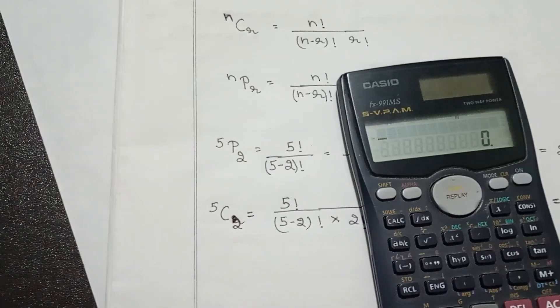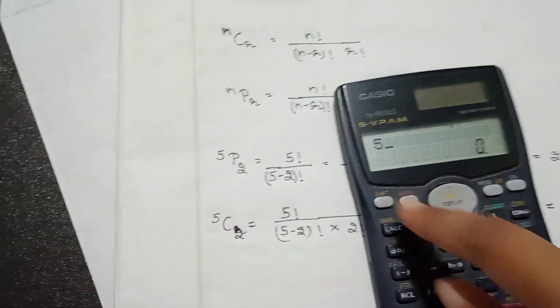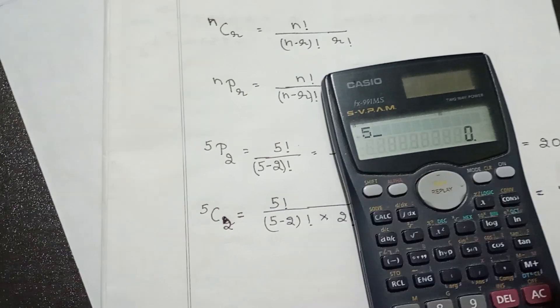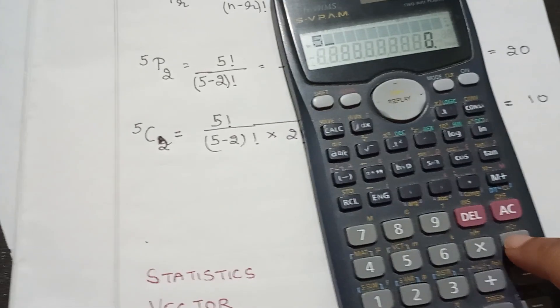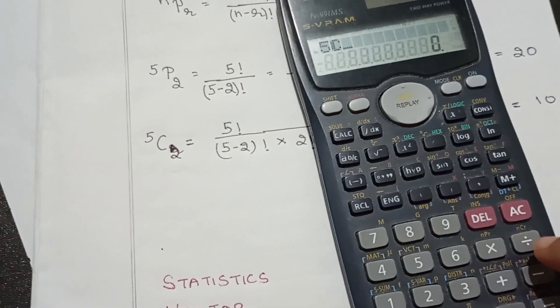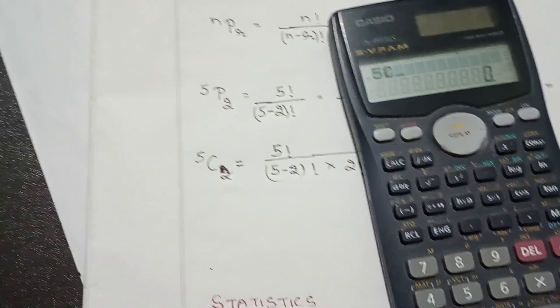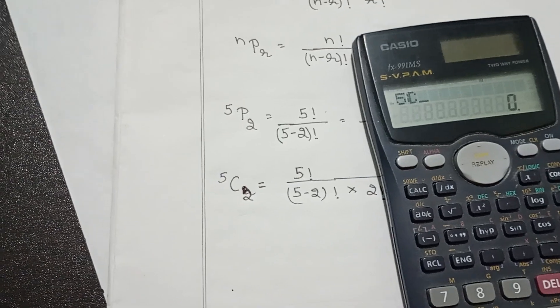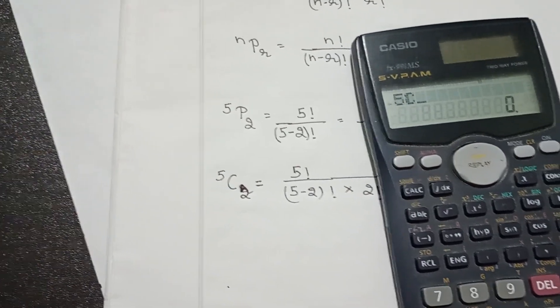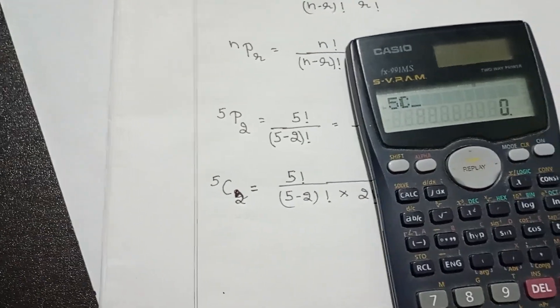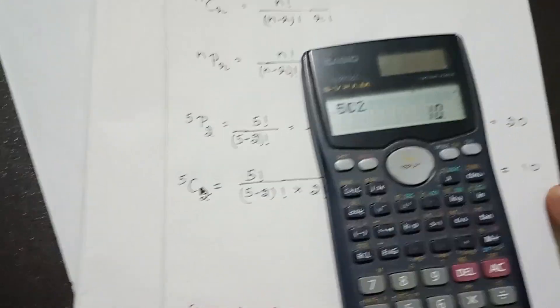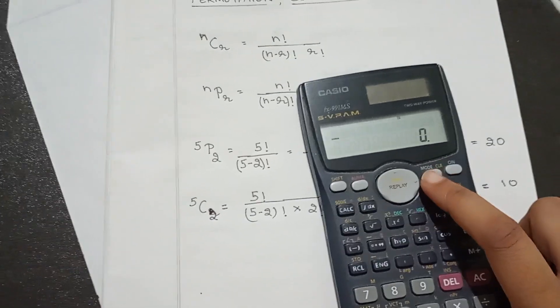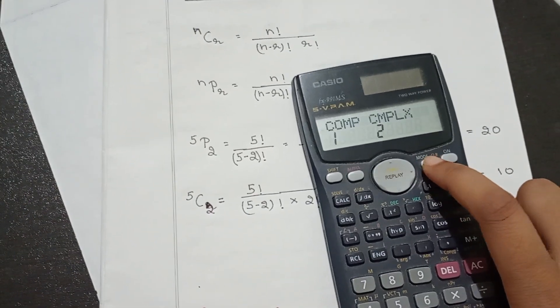For 5C2 (NCR), press 5, then Shift and the divide key to get C — since NCR uses divide in the format. N is 5, which we have already typed; we get P or C by using Shift with the multiply or divide key respectively, then R is 2. The result is 10, the same as the manual calculation.